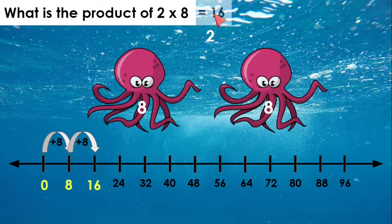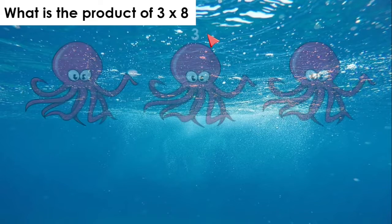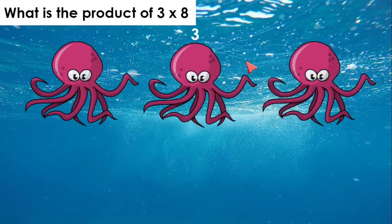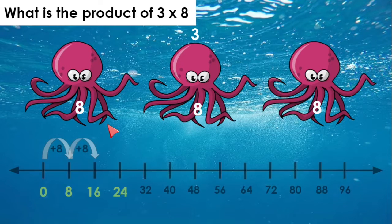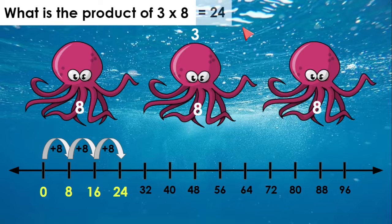3 times 8. We have 3 octopus with 8 legs each. How many legs will we have? Let's skip count. So far we're at 16. If we add another 8, we get 24. So 3 times 8 equals 24.